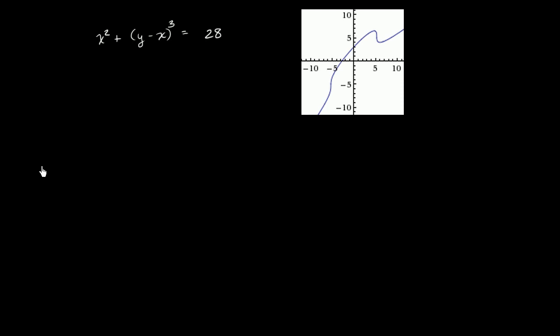We've been doing a lot of examples where we just take implicit derivatives, but we actually haven't been calculating the actual slope of the tangent line at a given point. And that's what I want to do in this video.